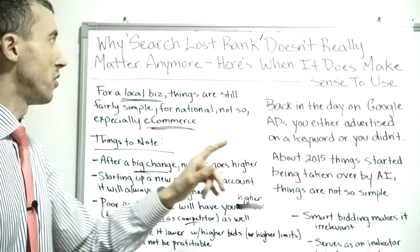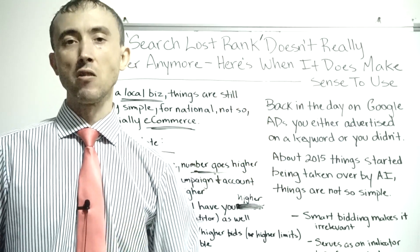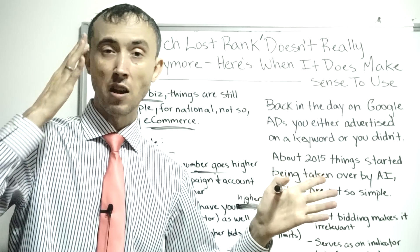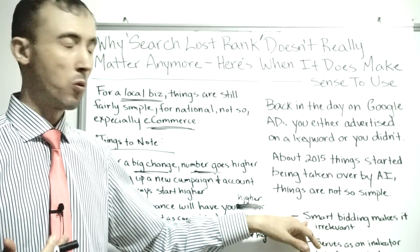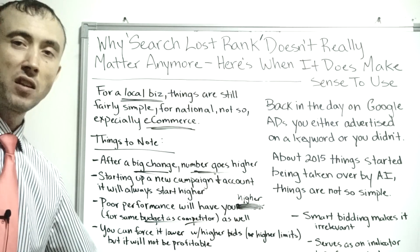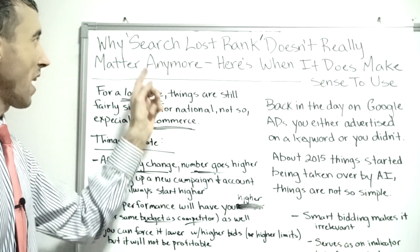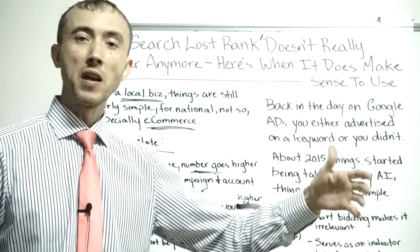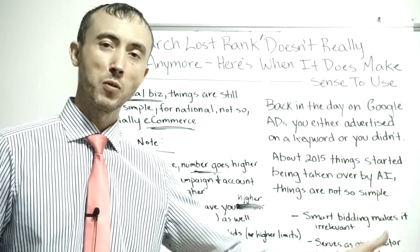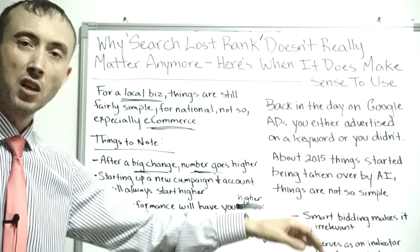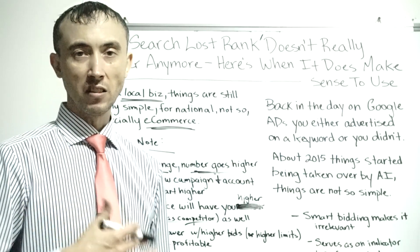Smart bidding makes Search Lost Rank pretty much irrelevant. Once you get enough conversions, you should switch to smart bidding. It will outperform manual bidding - even for someone like me who does ad strategy all day. You put in your target cost per lead or cost per sale, and if the Search Lost Rank ends up at 50% because that's where Google can get you the most conversions at your target cost per conversion, that's just what it is. Getting it to zero would mean more conversions, but they wouldn't be at the target cost per conversion you want, and the only way to get there would be to pay more per lead or accept a lower ROAS.